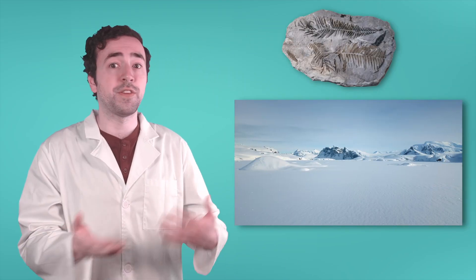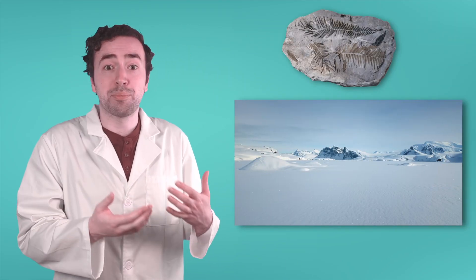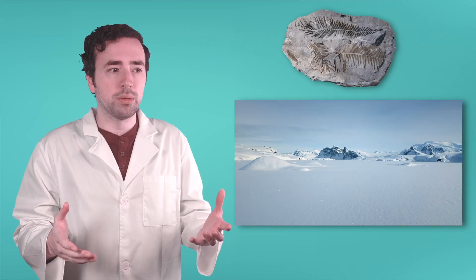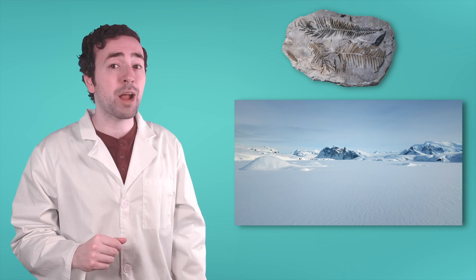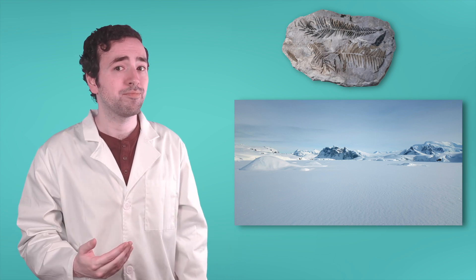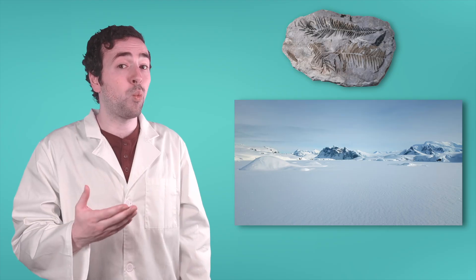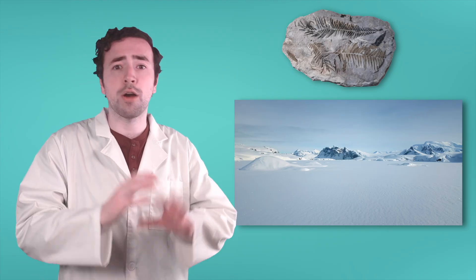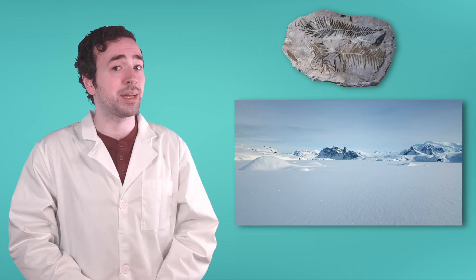Fossils act like a snapshot in time, which means they could teach us a lot about changes that have happened to the Earth. For instance, fossils can provide clues to how the Earth's climate has changed over time. Paleontologists have found fossils of tropical plants in places that are now freezing cold, like Antarctica. What do you think this could mean for what this area was like in the past? It was probably once much warmer and covered in lush forests instead of ice.